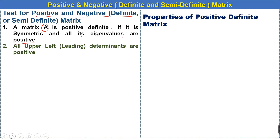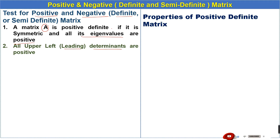The second test: all upper-left or leading determinants are positive. If all the leading determinants of the matrix are positive, then the given matrix is positive definite. Otherwise the matrix is negative definite or semi-definite. The matrix is semi-definite when any eigenvalue is zero.